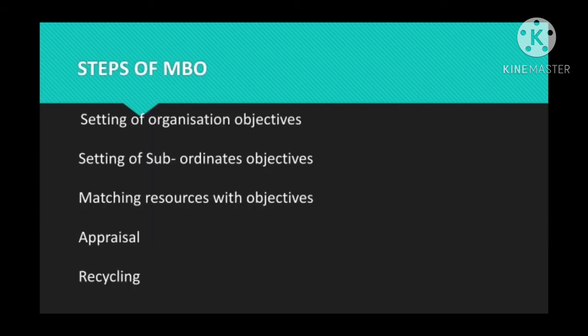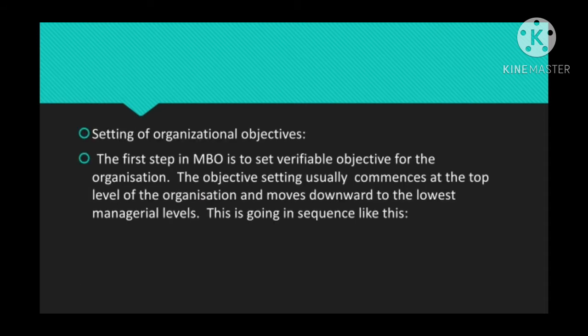So now we can discuss the different steps of MBO. There are five steps in MBO: setting of organizational objective, setting of subordinates' objective, matching resources with objective, appraisal, and then recycling. These are the different steps or process of MBO.